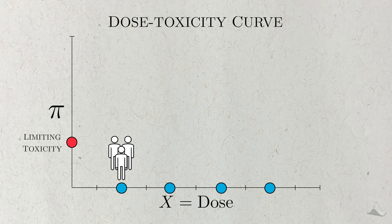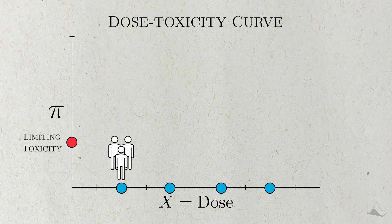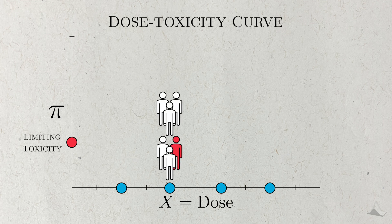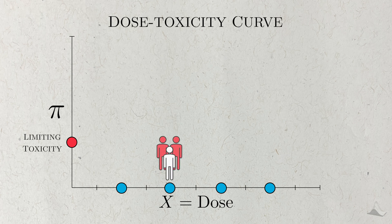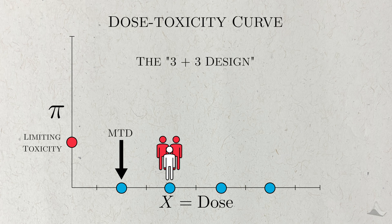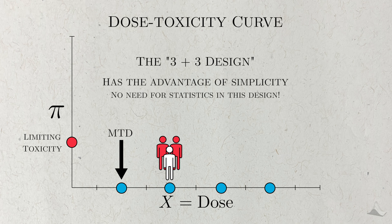One approach is to just start at the lowest dose, give it to three people, and see if any of them get sick. If no one does, you move on to the next dose, and give it to three more people. But if someone gets sick, you try it again at the same dose, and move up if only one person in total gets sick. But if two or more people get sick at a given dose level, then you declare the dose below it the MTD. This is the so-called 3 plus 3 design. One advantage of this design is its simplicity. Anybody taught the design can run it. The problem with it is that it's too simple. It has a tendency to produce really crude MTD estimates.